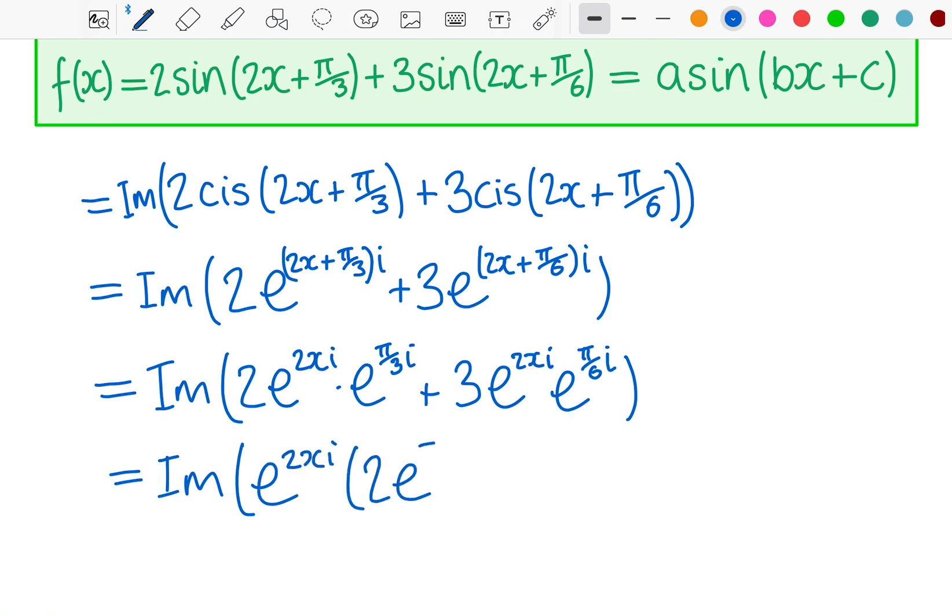That means I can factor out e^(2xi) from both. The reason that that is helpful is because now inside the main bracket, I do have just complex numbers, just two polar form complex numbers.